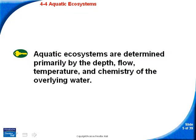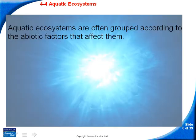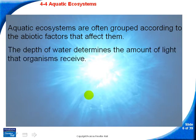What are the main factors that govern aquatic ecosystems? They're determined primarily by depth, flow, temperature, and the chemistry of the overlying water. Ecosystems are often grouped by the factors that affect them. Depth is a big one — the depth of the water determines the amount of light that organisms receive.